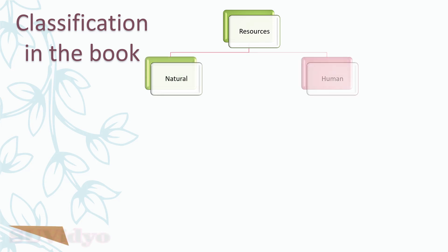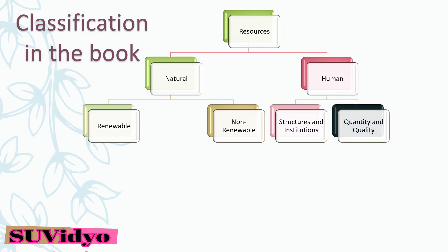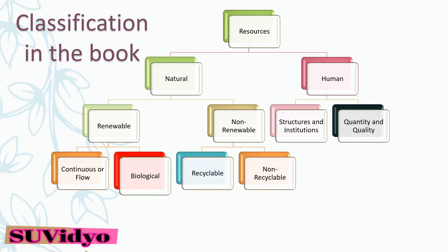In the NCERT book, another classification of resources is given. According to the book, resources can be classified into natural and human. Natural resources can further be classified into renewable and non-renewable. Human resources can be classified into structures and institutions, and quantity and quality. Renewable resources can be continuous or flow and biological. Non-renewable can be classified into recyclable and non-recyclable. Biological resources can be classified into natural vegetation and wildlife.